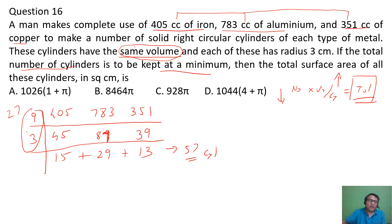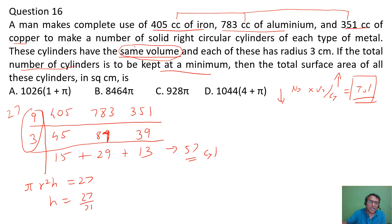Now, if the volume of each cylinder is 27 and we know the radius is 3, the volume of each cylinder is πr²h, which equals 27. Since r=3, h = 27/(π×3²) = 3/π. So the height of each cylinder is 3/π.